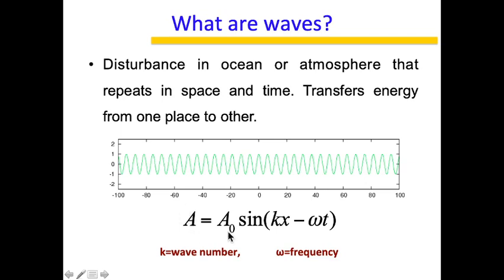A very simple wave characteristic equation to define a wave: if you take a sine wave, any perturbation or disturbance A will have some amplitude A-naught and a sine wave pattern governed by the wave number — that is, how many waves are present — and the frequency — how frequently they repeat in time. The wave number and frequency are very important for any given wave. That is a basic definition of a wave.